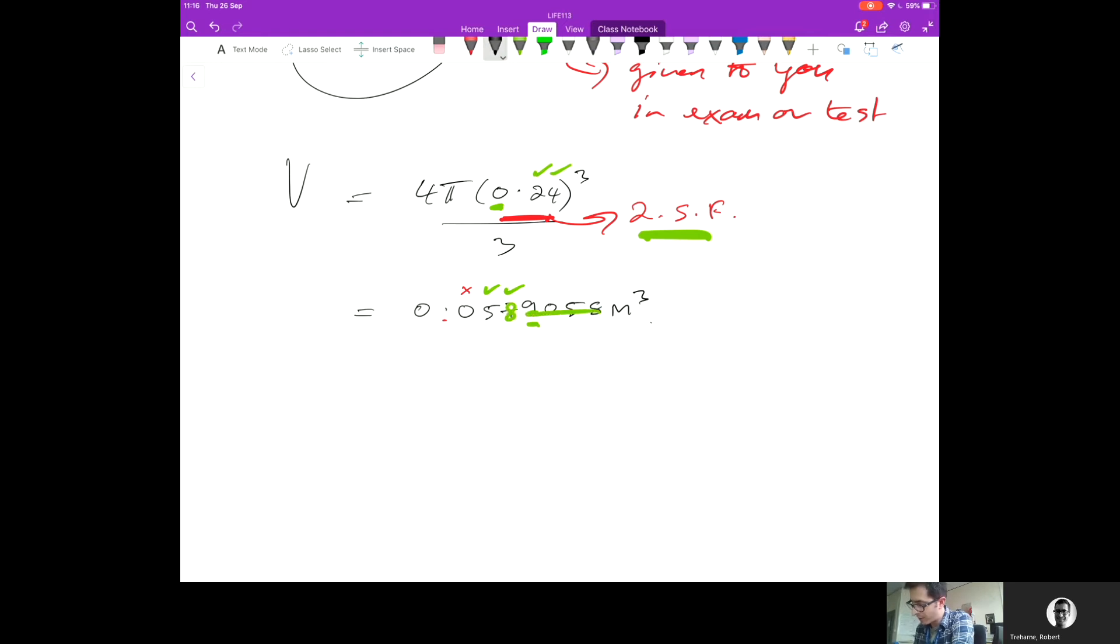Let's rewrite that: 0.058 meters cubed to two significant figures. If you do any calculation involving multiplying or dividing by a number with a set number of significant figures, you express the answer to that number of significant figures as well. We've done it in meters cubed.